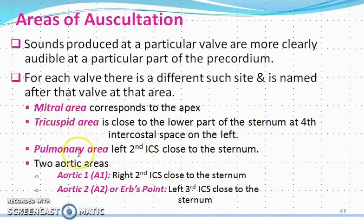The semilunar valves consist of the pulmonic valve and the aortic valve. It is very important to understand that sounds produced at a particular valve are more clearly audible at a particular part of the precordium.